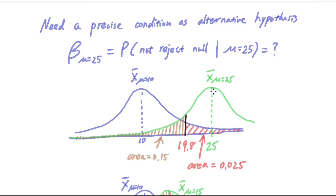And under the alternative hypothesis that the mean is at 25, we want to look at this brown area, which is the area under the green curve on the left side of 19.8. And it's evaluated to be 0.15. And that is exactly the value of beta.